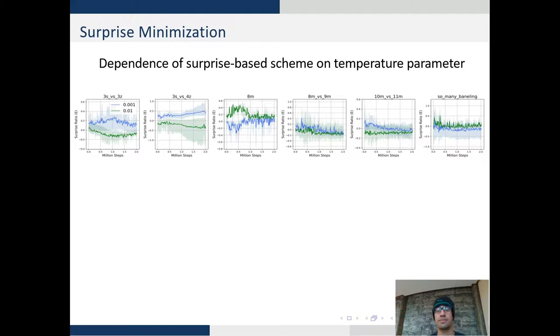To further understand surprise minimization, we vary the temperature parameter and see how our agent does in comparison to different values and we see that a lower value of surprise is suitable. We see that surprise is heavily dependent on the temperature parameter making it useful for the Q-mix objective.